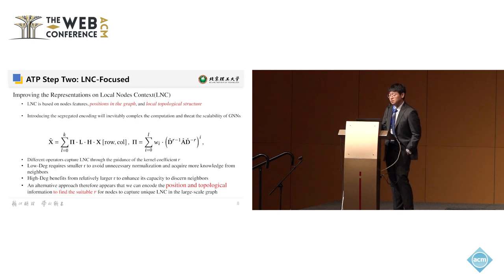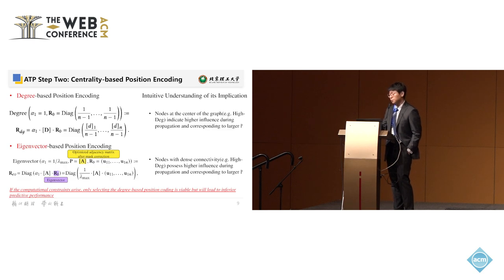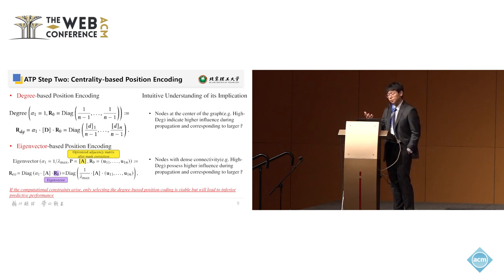The second step aims to improve representation of the local node context. Our objective is to assign a smaller r value to low-degree nodes and a larger value to high-degree nodes through an adaptive mechanism. We encode positional information from three perspectives. The first is degree-based positional encoding: if a node is at the center of the graph, it is highly influenced during propagation by its neighbors due to high connectivity, so we give it a larger kernel coefficient to help it discern from its neighbors. We also draw from the spectral realm, using eigenvector-based positional encodings to identify how densely high-degree nodes are connected to their neighbors, assigning larger kernel coefficients to those with higher influence.